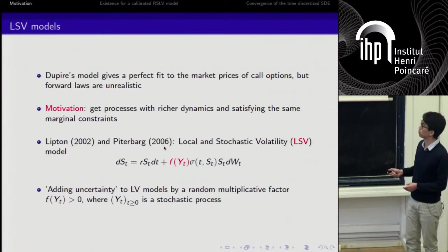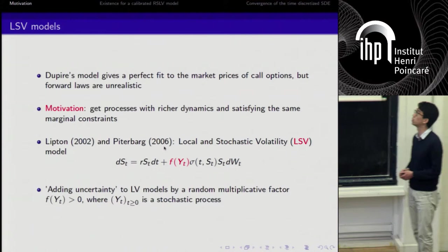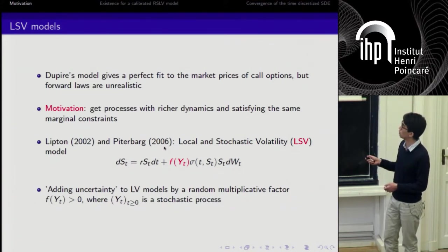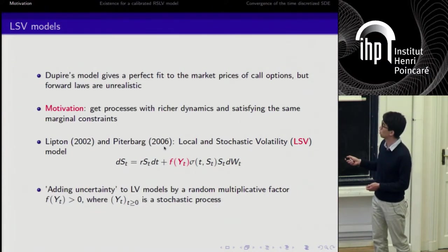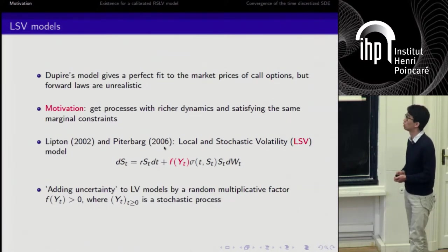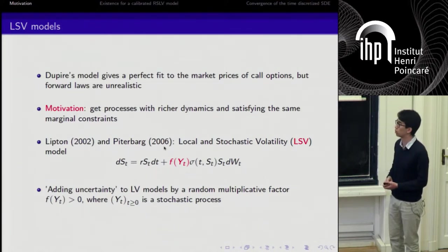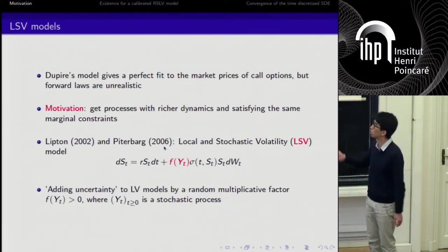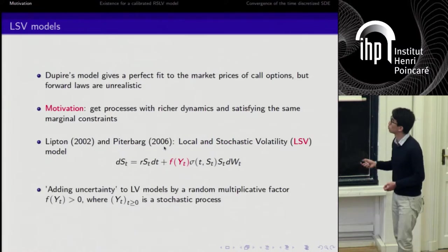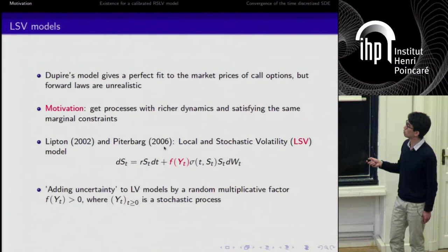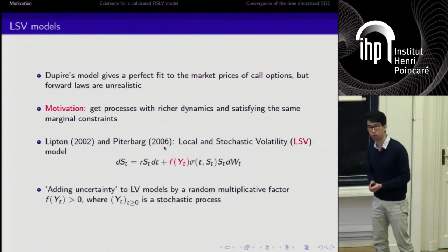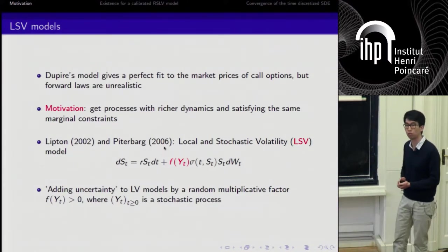Ten years later, Lipton and then Piterbarg suggested a local and stochastic volatility model. What we have here is we still have a deterministic function of the time and spot, but we add some stochasticity with a random multiplicative factor F of Y_t, where Y_t is another stochastic process. For instance, a CIR process or Heston integral or something else, which could be autonomous for instance, or depending on S. Let us suppose that we fix F, and now I want to calibrate S to the market. So I have some degree of freedom on sigma. What sigma should I choose?